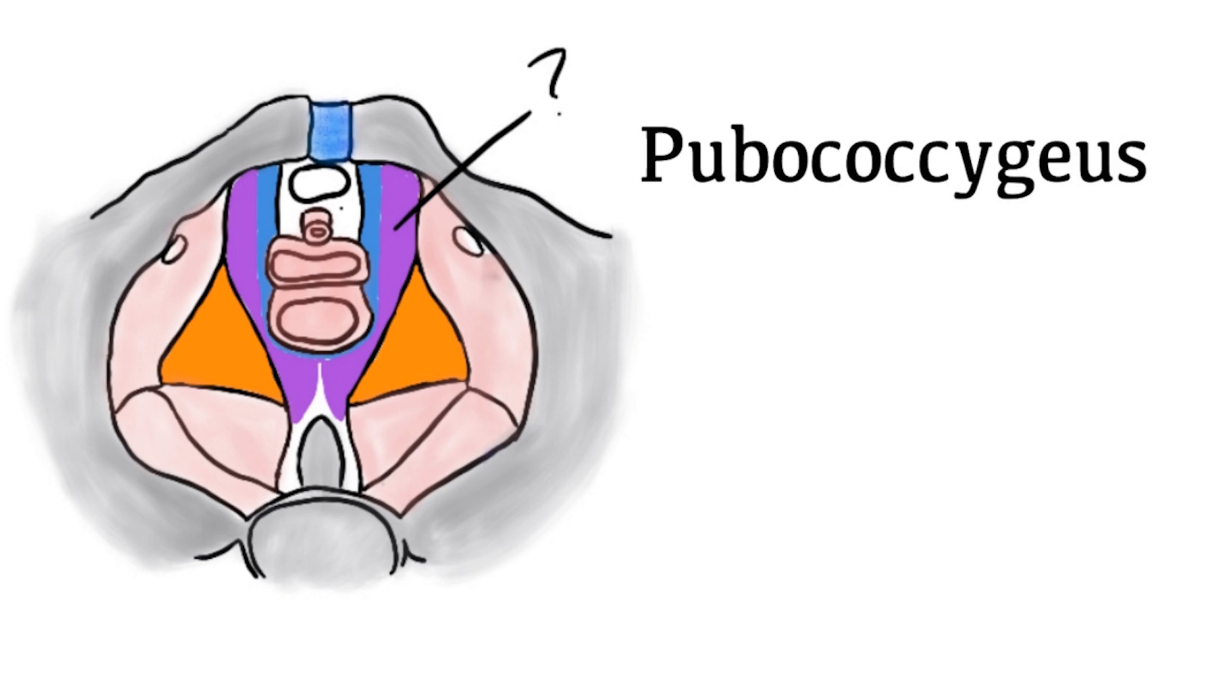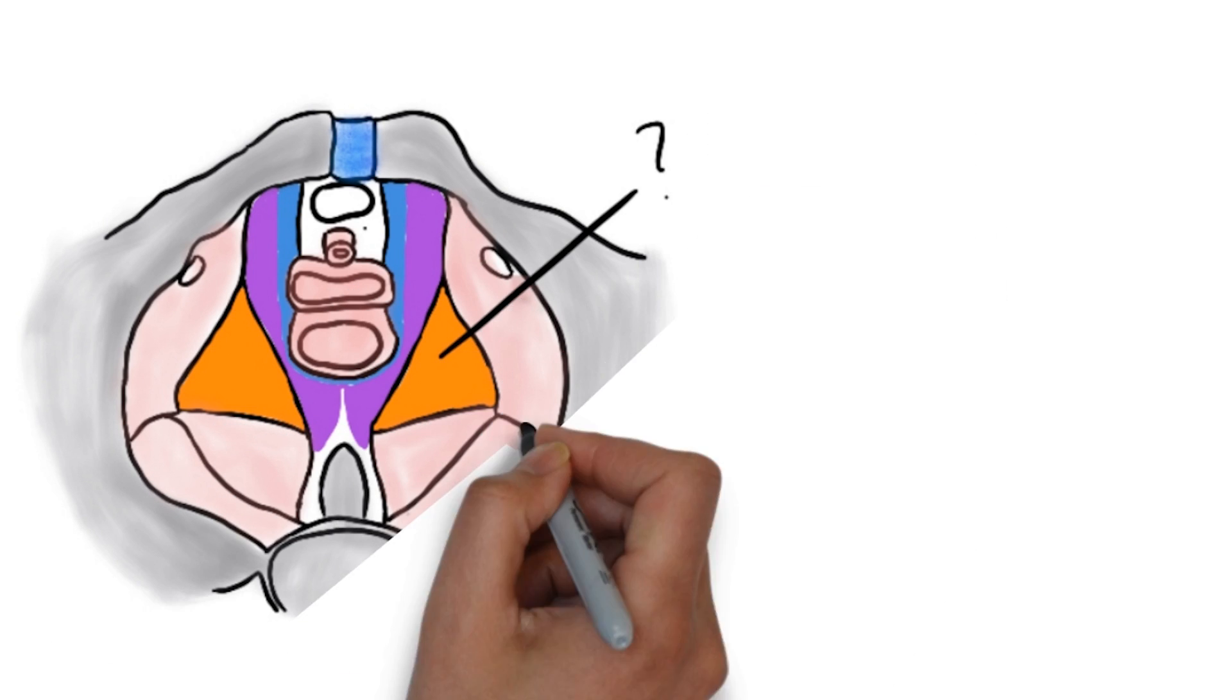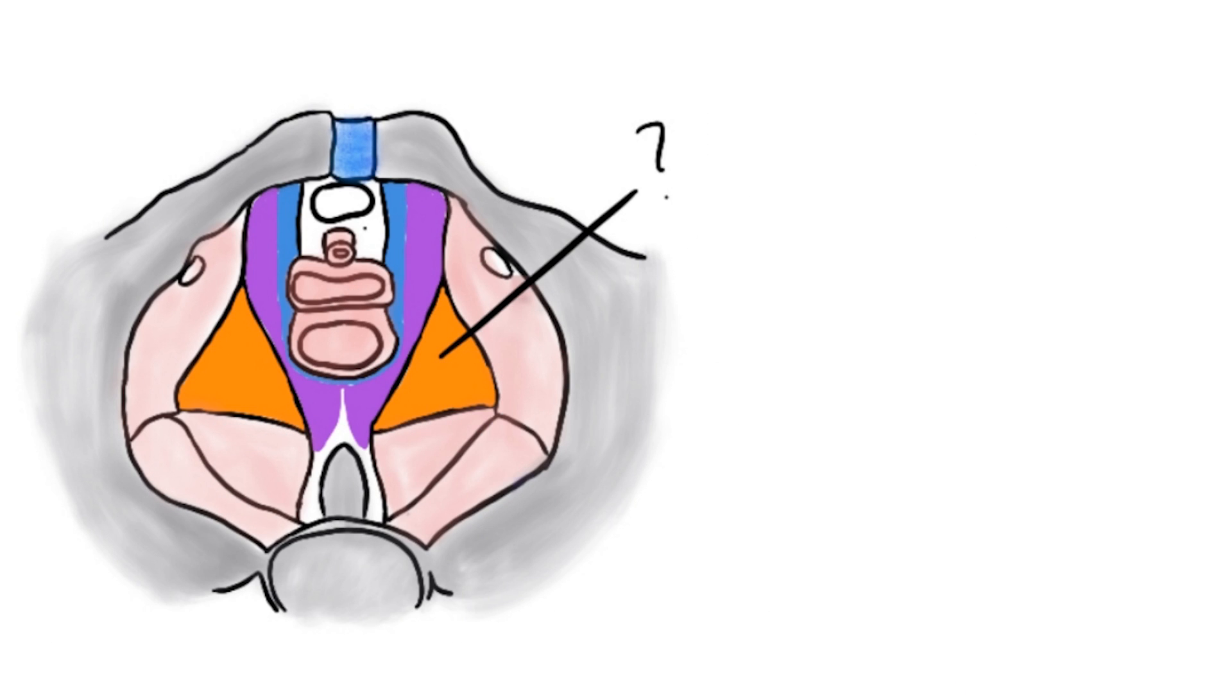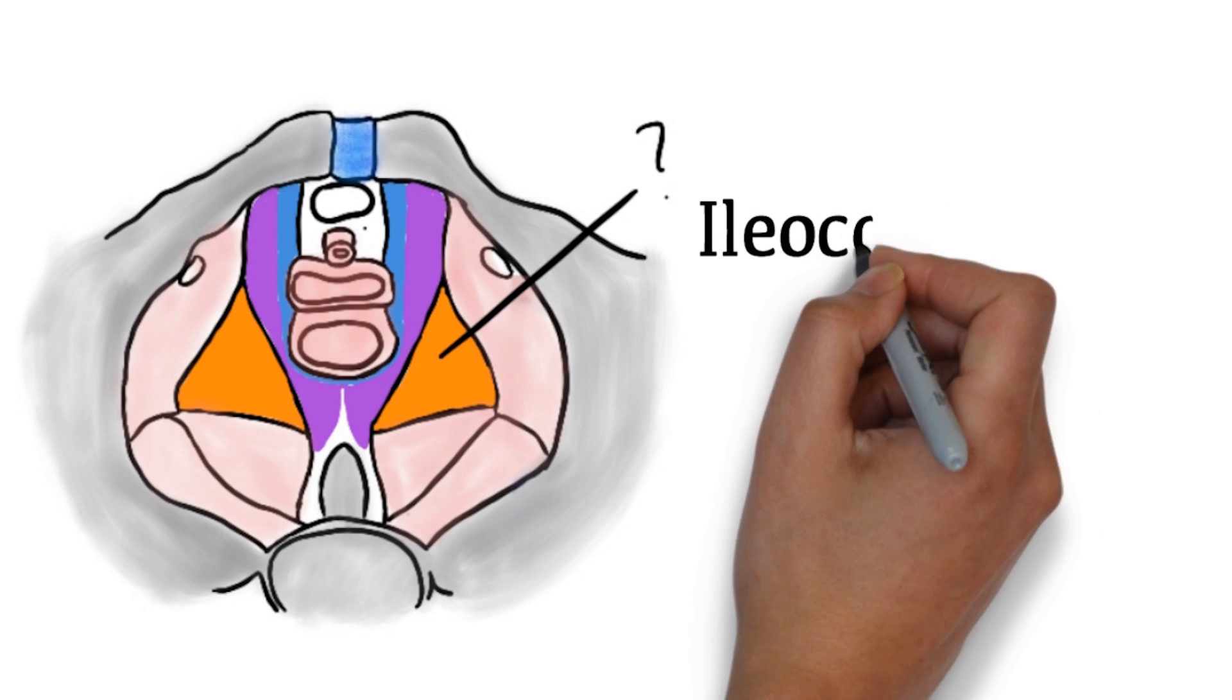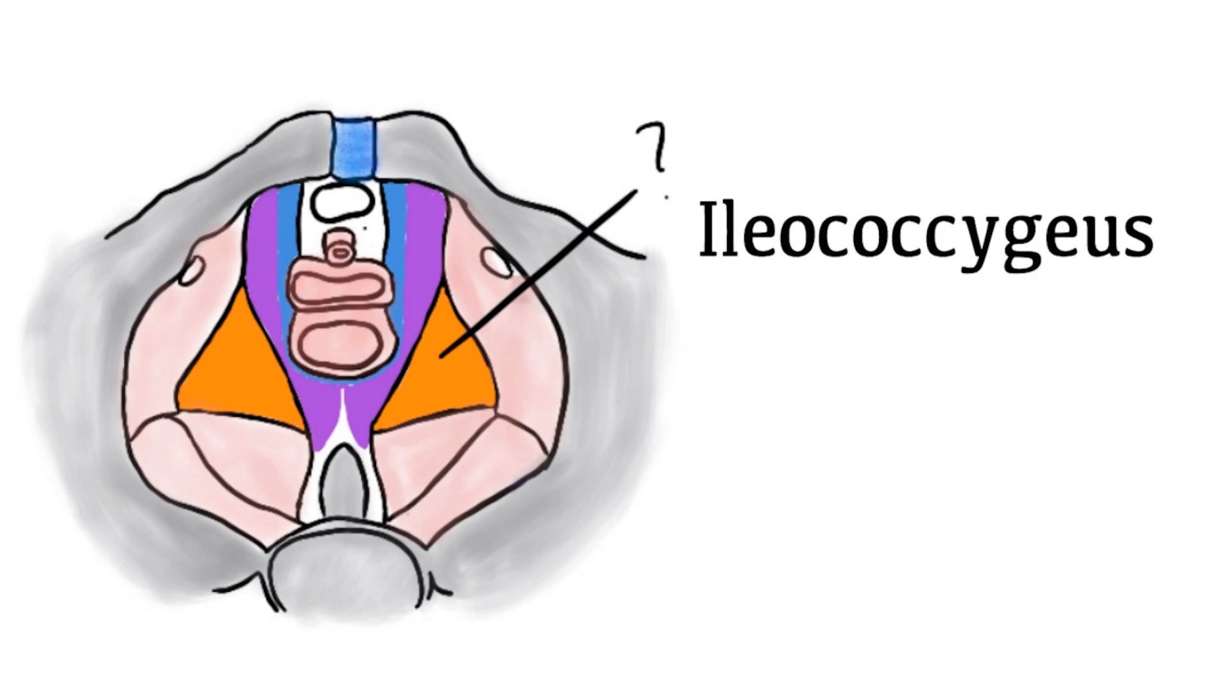It attaches to the vaginal walls, urethra, anus, perineal body, and inserts into the coccyx. It suspends the vaginal walls. Iliococcygeus spans from the ilium to coccyx.